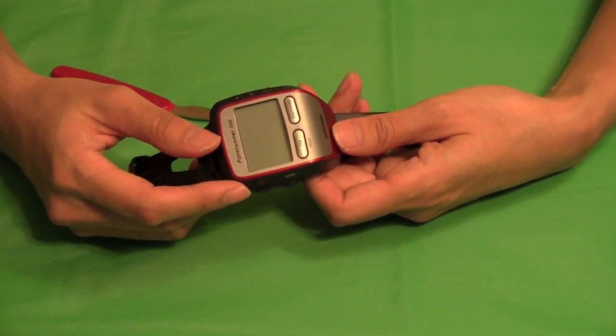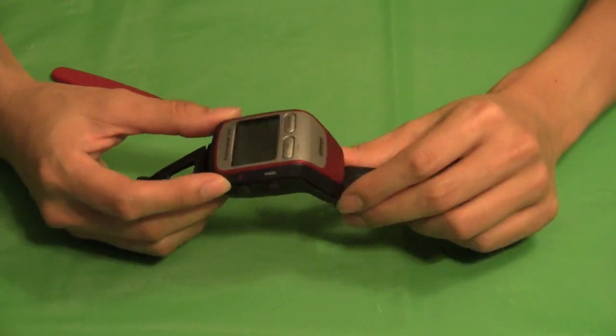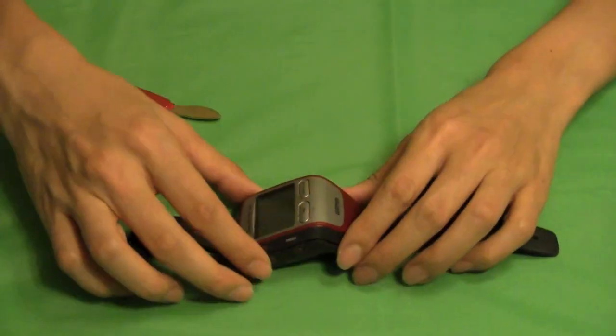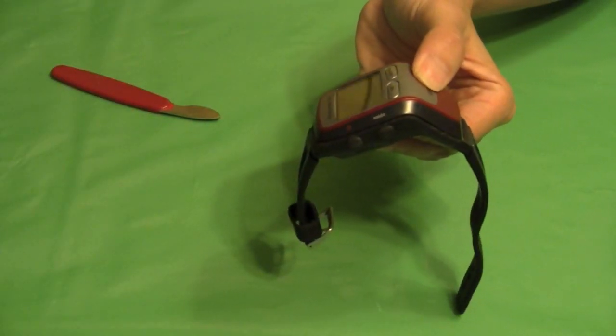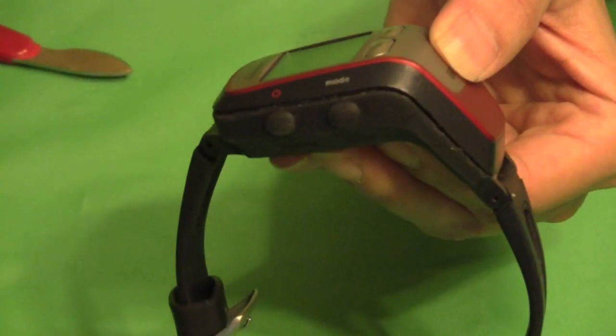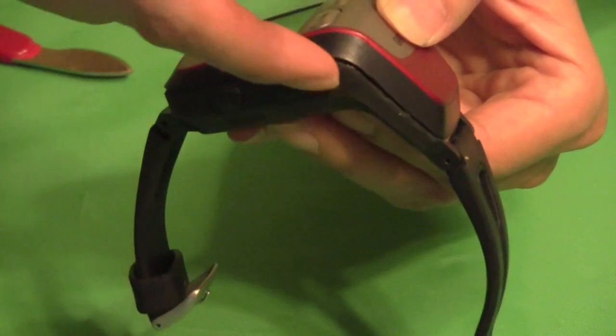The first step in replacing the battery on your Garmin Forerunner 305 is to take the watch apart. Now it comes apart right here at this seam. I'm going to zoom in a little bit so you can see better. Here's the side of my Garmin watch and there is this very slight seam right here.